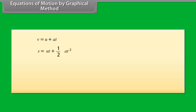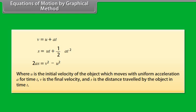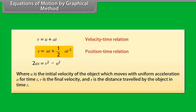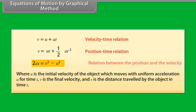Equations of motion by graphical method: The three equations of motion are: V = U + AT; S = UT + ½AT²; and 2AS = V² − U². We use the initial velocity U of an object moving with uniform acceleration A for time T, where V is the final velocity and S is the distance traveled. These equations describe the velocity-time relation, position-time relation, and the relation between position and velocity respectively.